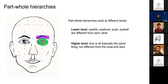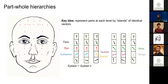At a lower level of representation, the eyelids, eyebrow, pupil, and eyeball are different from each other. But at a higher level, the eye is basically one thing, while different from the nose and ears. We might have one representation corresponding to the eye, another for the nose, and another for the ears. The key idea in this paper is that we can represent that segmentation by 'islands' of identical vectors.